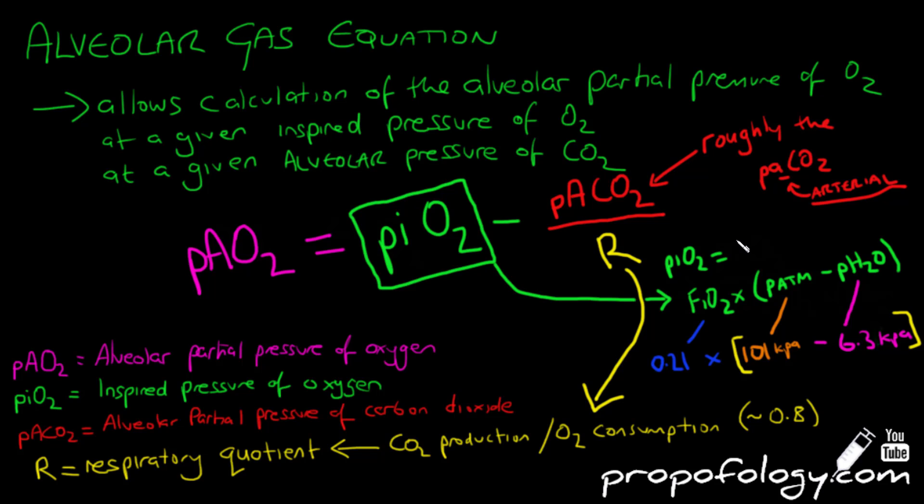Barometric pressure is halving every 18,000 feet. The partial pressure of water vapor remains constant at 6.3 kPa or 47 millimeters of mercury, meaning no matter what altitude you are at, the partial pressure of water will always be 6.3 kPa. So if you plug all this in, 0.21 multiplied by 101 take away 6.3, you will get 19.9 kPa for your pressure of inspired oxygen.